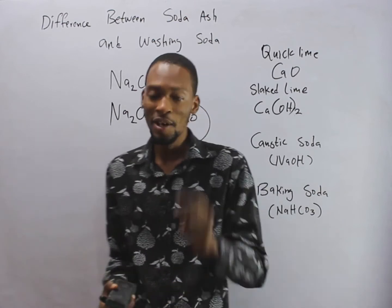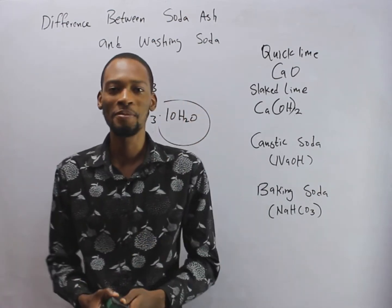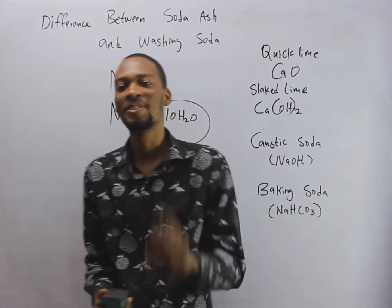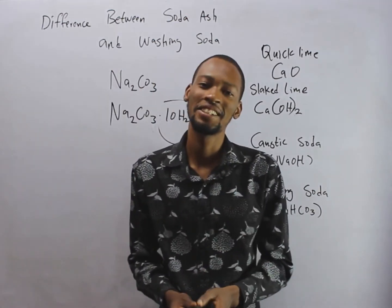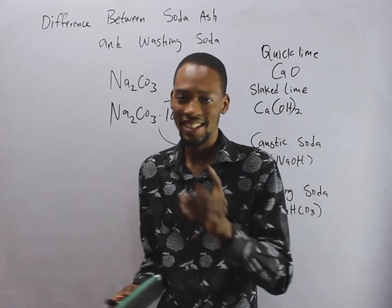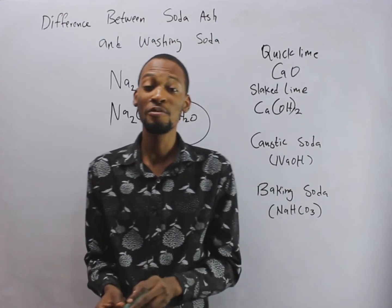Sodium hydroxide is caustic soda, and sodium hydrogen carbonate is baking soda. Hope you find this helpful, thank you for watching.